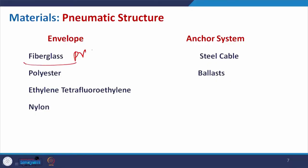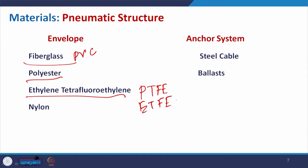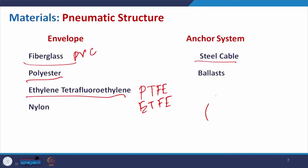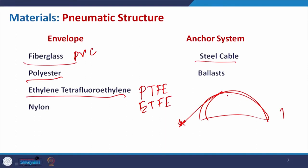For the envelope material, fiberglass PVC, polyester, ETFE (ethylene tetrafluoroethylene), PTFE, and nylon can be used — materials with enough strain-to-weight ratio that give structural advantage. For the anchor system, steel cable is used to hold it, tied at a point or using ballast — such as temporary bags of cement or a permanent solid post connected to the structure.